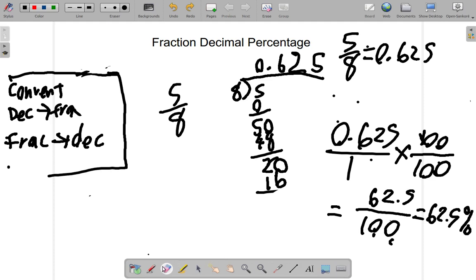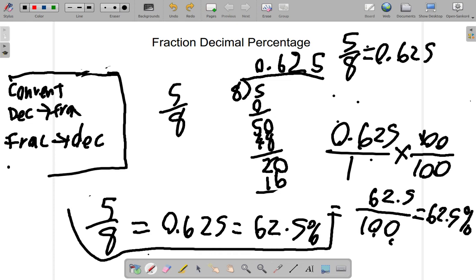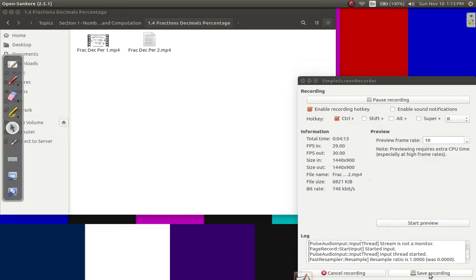What we end up with is the fact that 5/8 as a fraction is equal to 0.625 as a decimal, which is 62.5 percent as a percentage. So we end up with this. I'll see you, that's good.